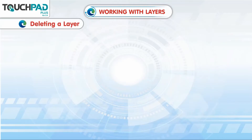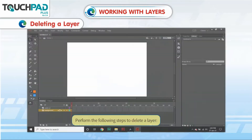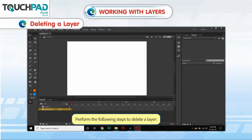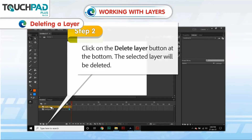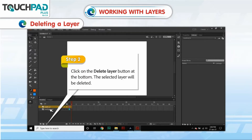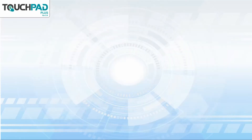Deleting a Layer: Perform the following steps to delete a layer. Step 1: Select the layer in the Timeline panel. Step 2: Click on the Delete Layer button at the bottom. The selected layer will be deleted.